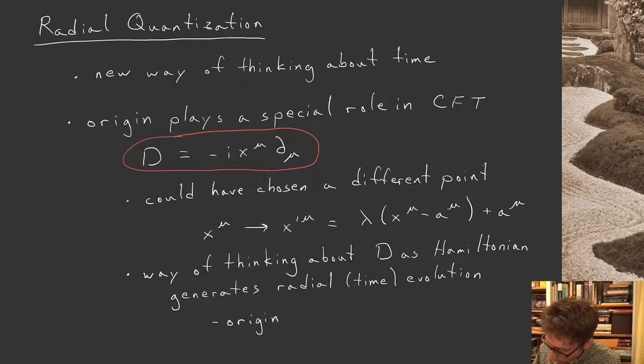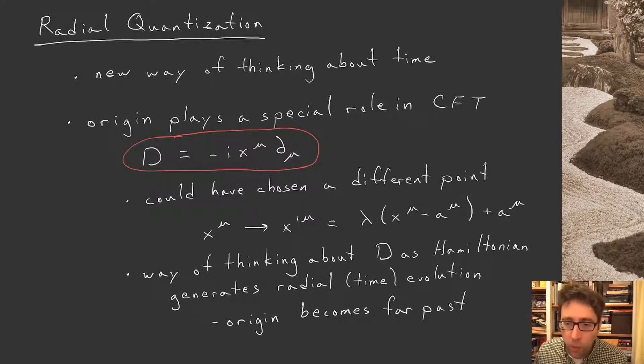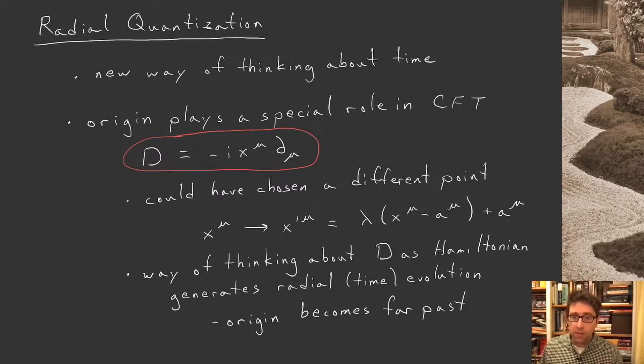From this point of view, the origin of our coordinate system becomes the far past. Let's compare this way of thinking with the standard way of thinking about quantization.